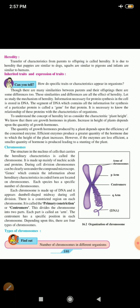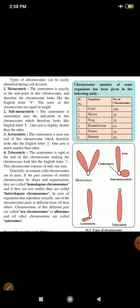Now, types of chromosomes. Find out. Number of chromosomes in different organisms is deleted. So that is deleted. Now, let us go to the next page. Types of chromosomes can easily be identified during cell division. Now, chromosome number of some of the organisms has been given in the following table. So, I will just read that first. Crab, 200 chromosomes. Maize, 20. Frog, 26. Roundworm, 4. Potato, 48. Human, 46.